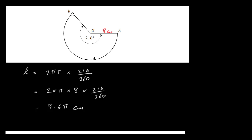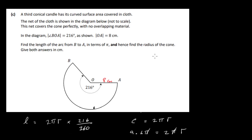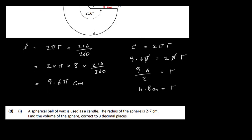This net is the curved surface area of the cone, so the arc length from B to A forms the circumference of the base of the cone. The circumference of the base is 2πr = 9.6π. The π's cancel, so r = 9.6 ÷ 2 = 4.8 cm. That gives us the radius of the cone.